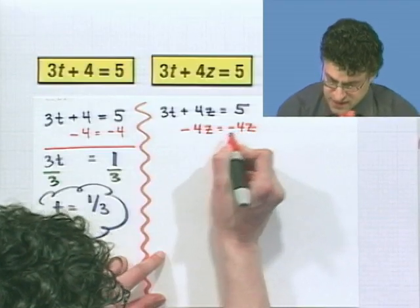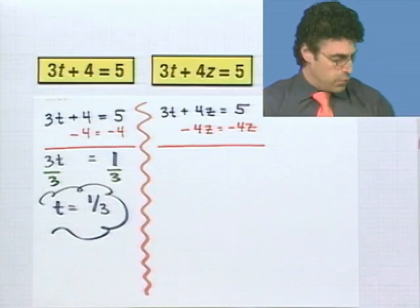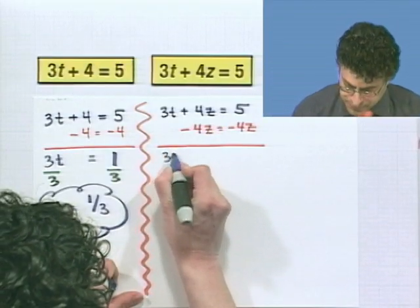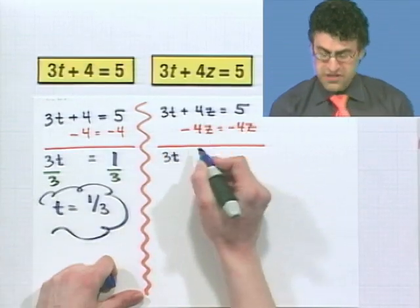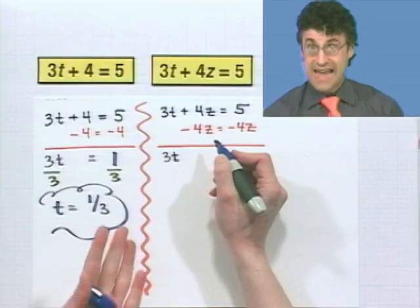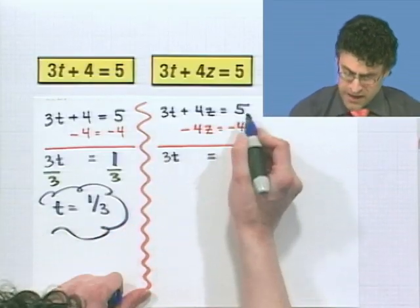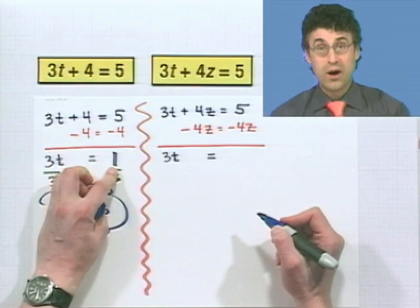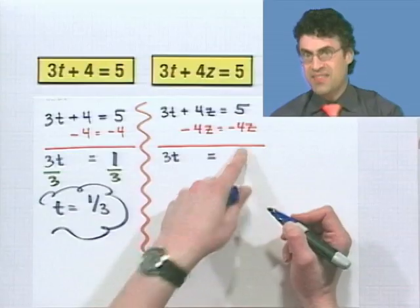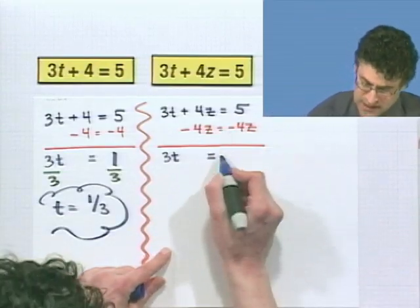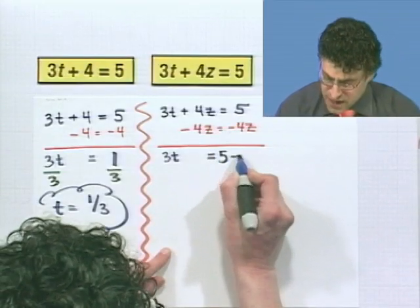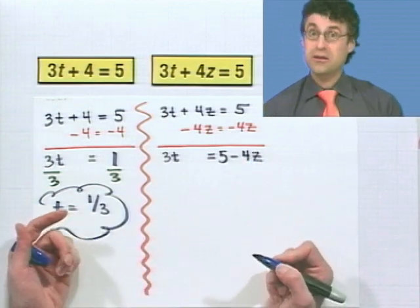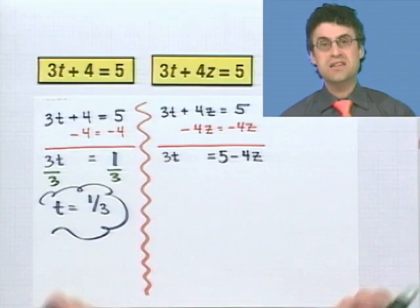And now, when I subtract, I still have the 3t. And now 4z minus 4z is 0, which is exactly as we designed. And that's going to equal what? Well, now I have 5 minus 4. Before I had 5 minus 4 and I got a 1. Well, here I've got z's in it, and that's just kind of hanging out there. I can't combine it. I could just write 5 minus 4z. And that's the best I can do. I can't combine them any further since z is a variable.